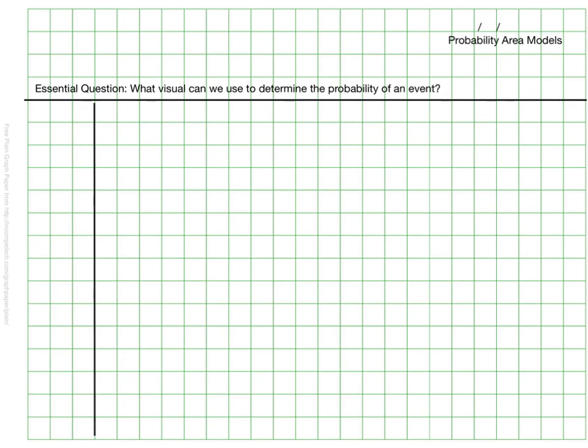This video is going to cover the topic of probability area models. Be sure the date and topic are at the top of your page. The essential question of this video is what visual can we use to determine the probability of an event?